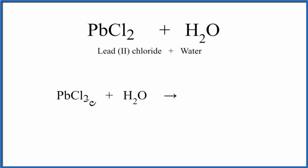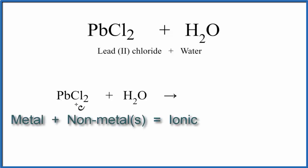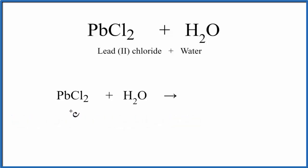Lead, that's a metal, and then chlorine, that's a non-metal. When you have a metal and a non-metal, you have an ionic compound. Quite often, they're soluble in water, but we should check a solubility table just to make sure.